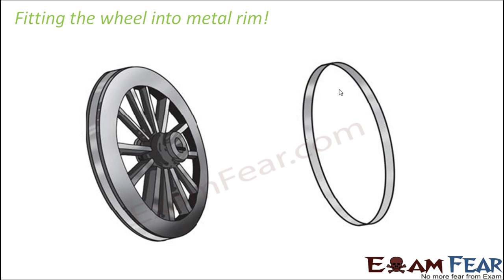Now let's look at something more interesting. Have you ever observed a wheel carefully? You will see that there is a metal rim on the wheel. The surprising fact is that the size of this metal rim is slightly smaller than the size of the wheel. So the question is: how does this metal rim fit into the wheel?